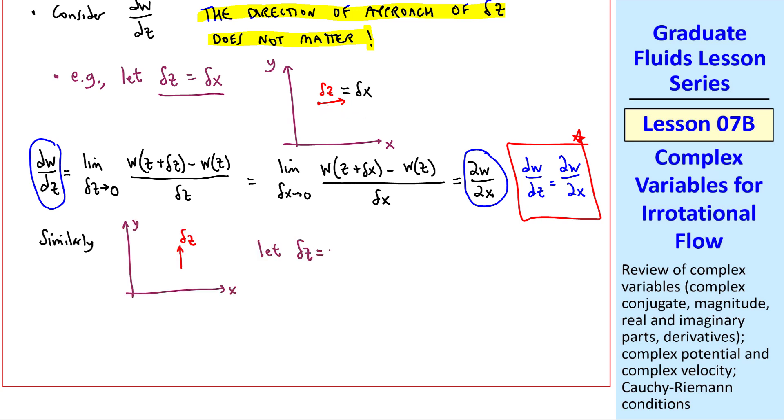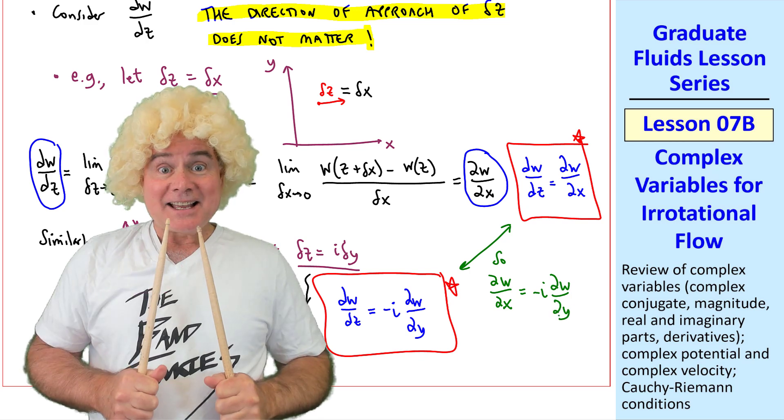Similarly, if we let delta z equal i delta y, we approach the derivative in the vertical direction. After some algebra, which I'll leave up to the student, we can show that dw dz is equal to minus i del w del y. Both of these equations must hold, so del w del x must equal negative i del w del y.